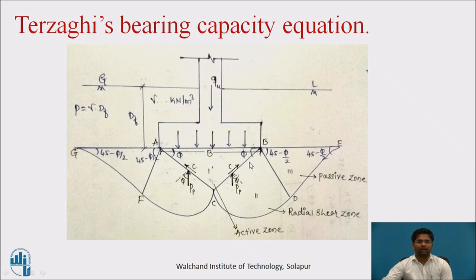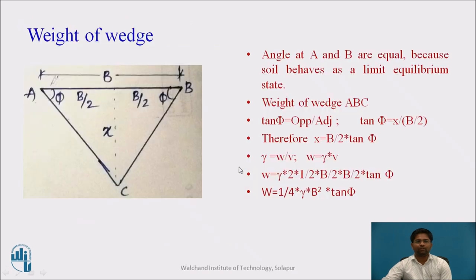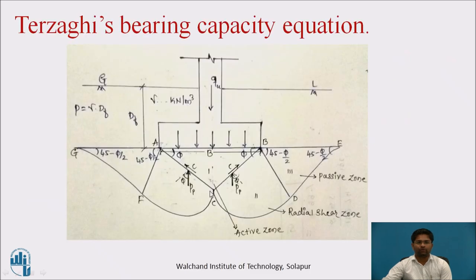Angle at A equals phi, angle at B is also phi. Due to the condition of limit equilibrium of soil sample, angle at CAB equals angle at CBA. QVU is vertical and symmetrical. Therefore, due to the presence of QVU, the passive pressure PP is acting in the upward direction at an angle of phi, and C, which is cohesion of soil sample, is acting in the inclined direction. We have to calculate the weight of wedge ABC.